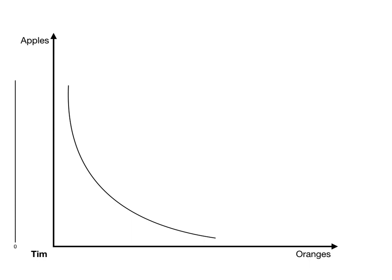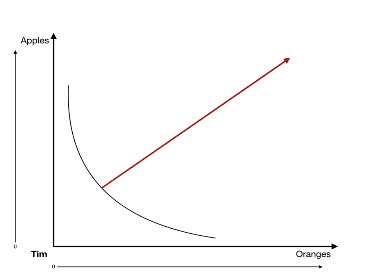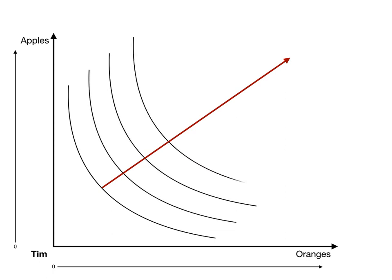Looking at this from Tim's perspective, notice that his indifference curve is convex to the origin, starting from zero and increasing as he goes up on the apple axis and increases on the orange axis. Any move to the northeast for Tim means he's getting more of both apples and oranges — these are more preferred bundles of goods. Tim's indifference curves move to the northeast, and therefore he's better off with each of them. Every time he moves to another indifference curve, his utility is increasing — it's like a mountain you're looking straight down, with Tim's utility increasing as he moves to the northeast.